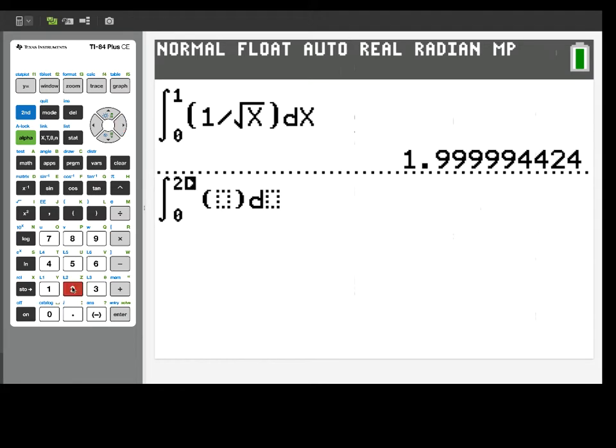Now let's try another one of these type 2 improper integrals, but this time, let's look at one that actually is divergent. We're going to look at the integral from 0 to 2, 1 over x squared dx. Again, we have a discontinuity at x equals 0, but 1 over x squared grows much faster near 0 than 1 over the square root of x.